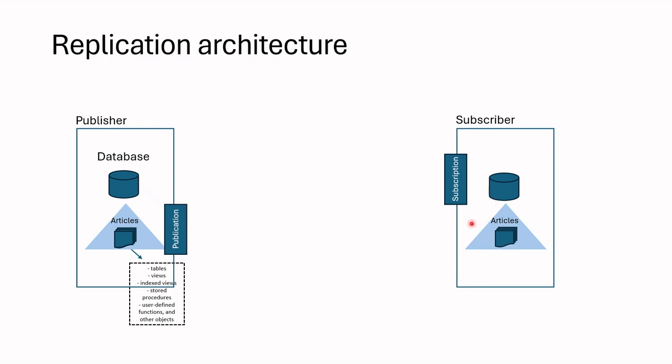We can choose which tables and which objects to replicate while creating publication, and only these objects are replicated in the subscriber. Articles in one database can be replicated to more than one database in one subscriber, or to more than one subscriber even.